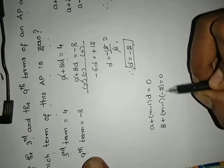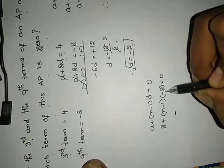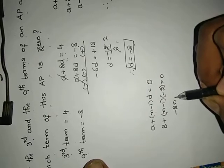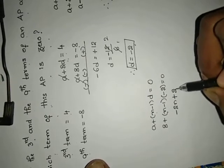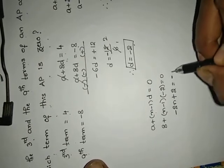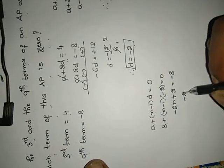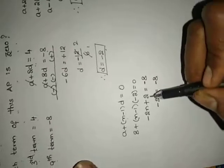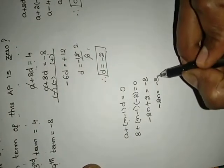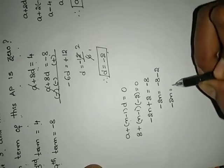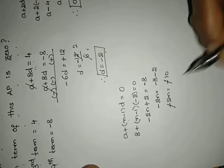Now multiply: plus into minus gives minus 2N. Minus into minus gives plus 2. If I send plus 8 to that side, minus 8. Minus 2N plus 2 equals to minus 8. Here minus, here minus, cancel.